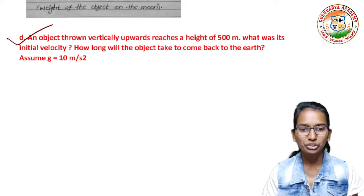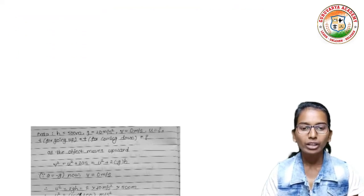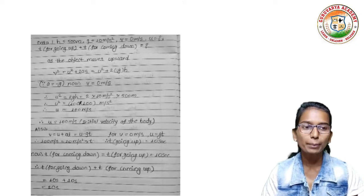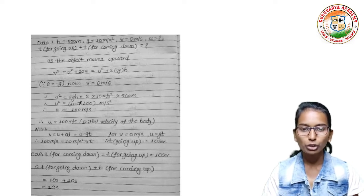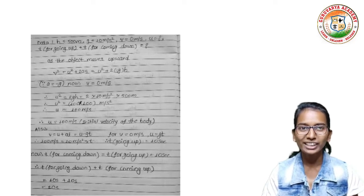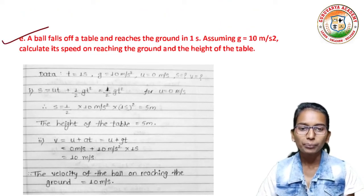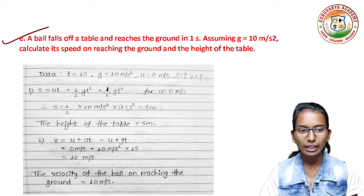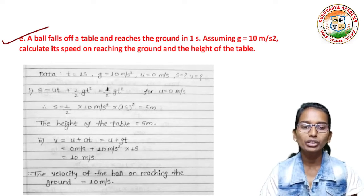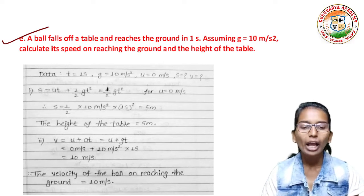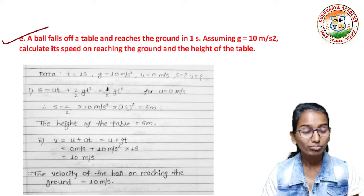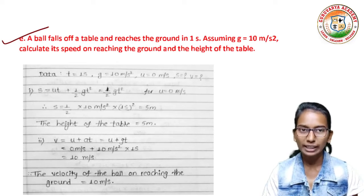Next problem: an object thrown vertically upwards reaches a height of 500 meters — what was its initial velocity, and how long will the object take to come back to the earth? Assume g = 10 m/s². You can see all the solved problems and solutions on the screen. Final answer will be 10 meters per second.